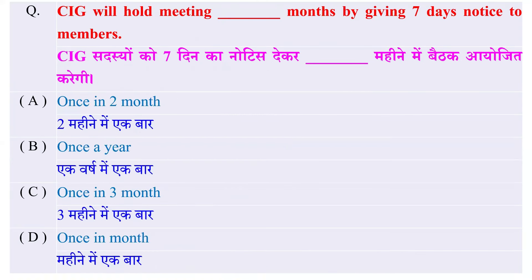CIG will hold meetings in how many months by giving 7 days notice to members — CIG सदस्यों को 7 दिन का notice देकर कितने महीने में एक बैठक आयोजित करेगी? Options: once in 2 months, once in a year, once in 3 months, या once in a month — और इसका सही जवाब है once in 3 months।